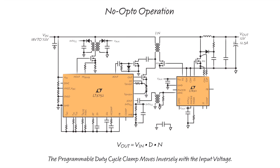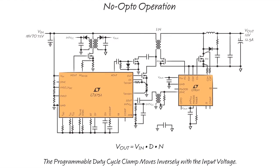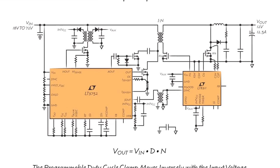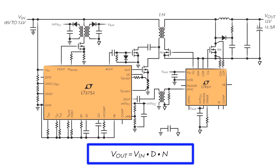This figure shows a complete 150W forward converter that requires no optocouplers, thanks to the LT3752's accurate programmable voltage second clamp. For a forward converter operating in continuous conduction mode, the output voltage is equal to VIN times N times D.